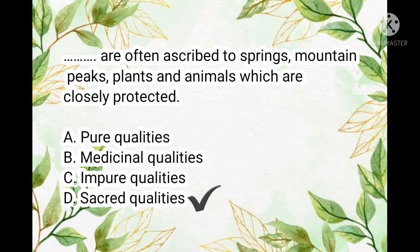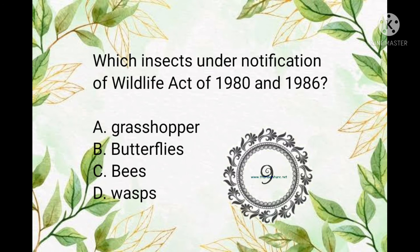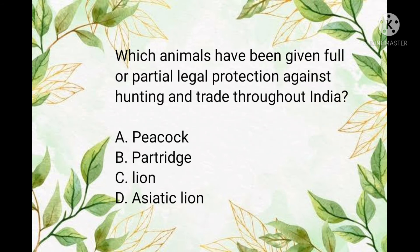The answer is sacred qualities. Question number seventeen: which insects are under notification of the Wildlife Act of 1980 and 1986? The answer is butterflies. Question number eighteen: which animals have been given full or partial legal protection against hunting and trade throughout India?